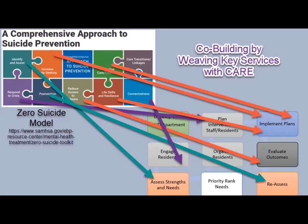Co-building by weaving key services with the CARE framework: here we examine what we might call the fusion of process and practice. Based on the micro elements fused with the macro elements — for instance, identify and assist the individual would develop from the process set forth looking at assets and strengths within the community and the planning and intervention. Increasing help-seeking behaviors would become part of the implementation. Responding to the crisis would also involve the planning and intervention element. Postvention is the evaluation and reassessment thinking that would go on in this process. Reducing access to means to harm is certainly part of the implementation, also evaluating the success of that.